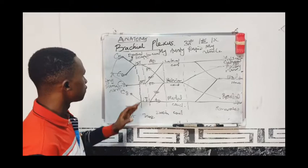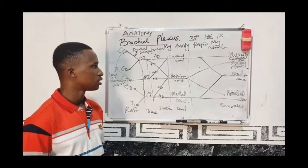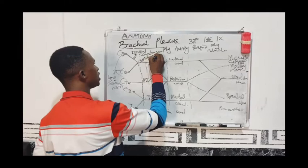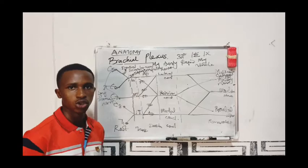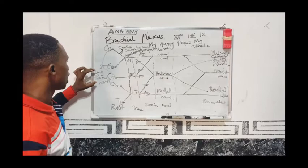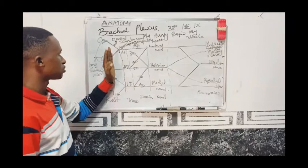From the superior trunk of the brachial plexus, two nerves arise. The first nerve is the suprascapular nerve, and the second nerve is the nerve to subclavius. So we have two nerves arising from the roots: the dorsal scapular nerve and the long thoracic nerve.